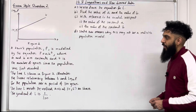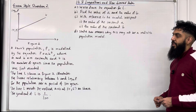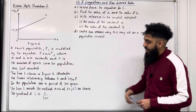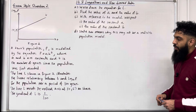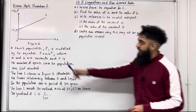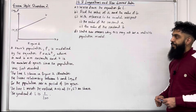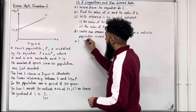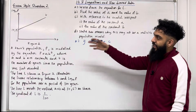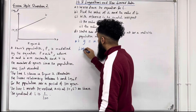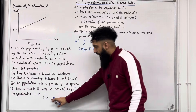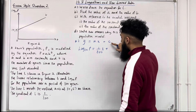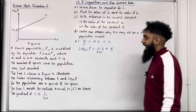Let's look at exam style question 2. A town's population P is modelled by P equals AB to the power T, where A and B are constants and T is the number of years since the population was first recorded. Line L shows the linear relationship between T and log base 10 of P over 100 years. The line meets the vertical axis at (0, 5) and has gradient 1 over 200. Part A: write down the equation for L. Using Y equals mX plus c, Y is log base 10 of P, m is 1 over 200, X is T, and c is 5.